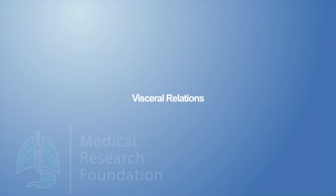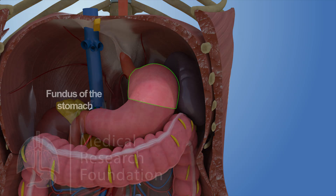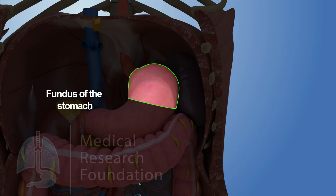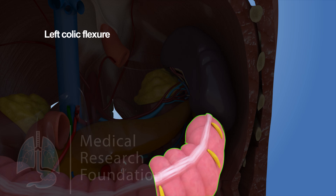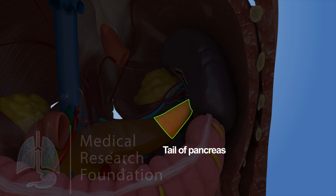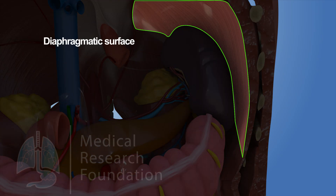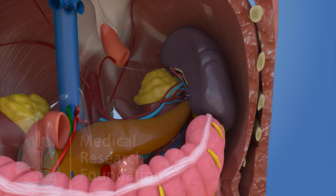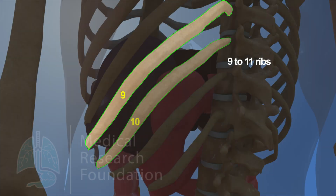The visceral surface of the spleen is related to the following viscera: fundus of the stomach, anterior surface of the left kidney, left colic flexure, and tail of the pancreas — these viscera produce impressions on this surface. The diaphragmatic surface is related to the diaphragm, which separates it from the costophrenic recess of the pleura, lung, and the 9th to 11th ribs.